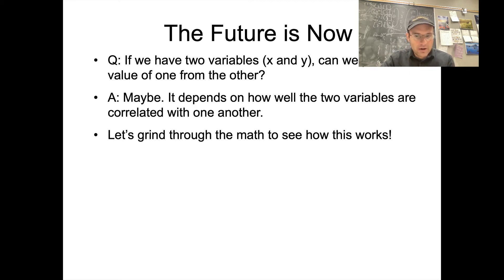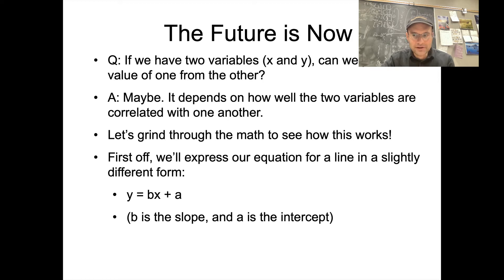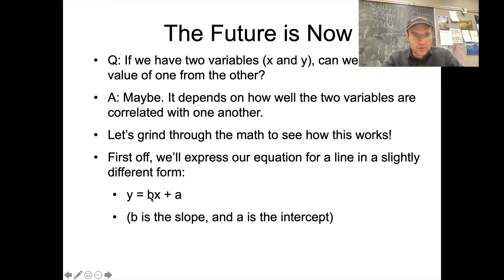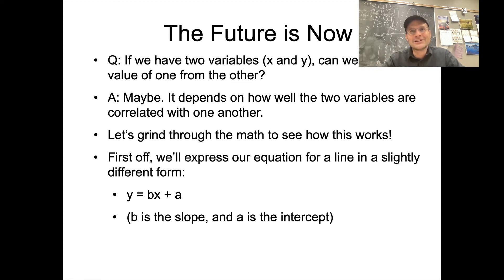What follows is going to involve a lot of math. We're going to start with a new expression for our equation for a line in a slightly different form: y = Bx + A. It looks exactly the same as before, just with different labels — B is the slope and A is the intercept. This will make the algebraic housekeeping easier as we go.